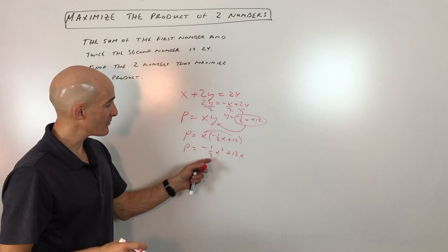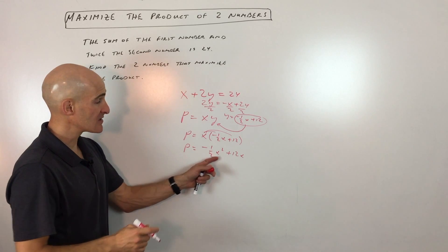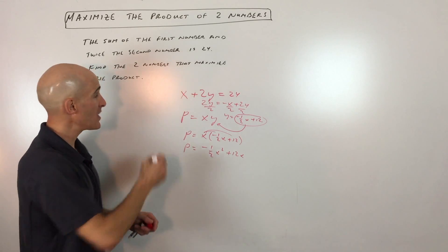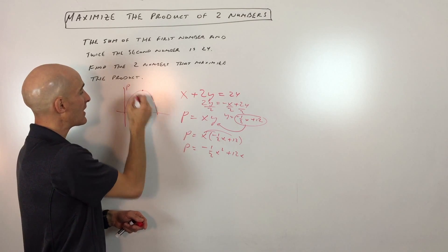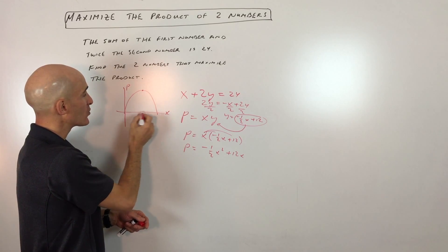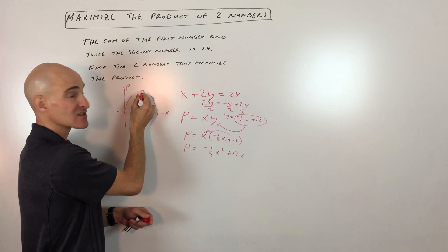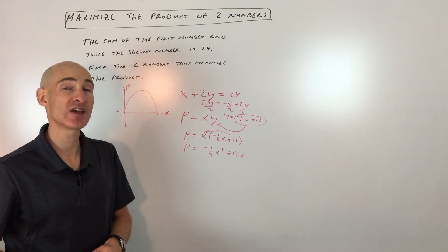Now the first thing you'll notice is that the a value is negative, and this is a quadratic equation, an x squared equation, which tells us that the parabola is opening down like this. So there's the product, here's the x value, and we're trying to find out what x value gives us a maximum product. You can see that occurs at the vertex.